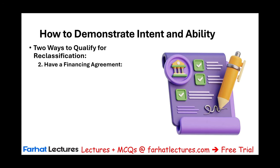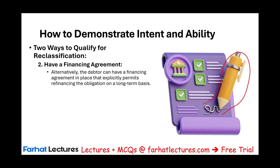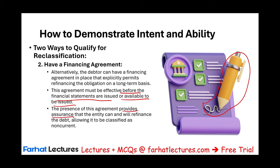The second way is to have a financing agreement in place. Another way the debtor can qualify is by having a financing agreement that explicitly permits refinancing the obligation on a long-term basis — most likely a signed agreement with a bank or financial institution. The bank is essentially saying they agree to refinance the debt. It's not done yet, but the agreement exists. The agreement must be effective before the financial statements are issued. The presence of this agreement provides assurance that the entity can and will refinance the debt — demonstrating both ability and intent — allowing it to be classified as non-current.